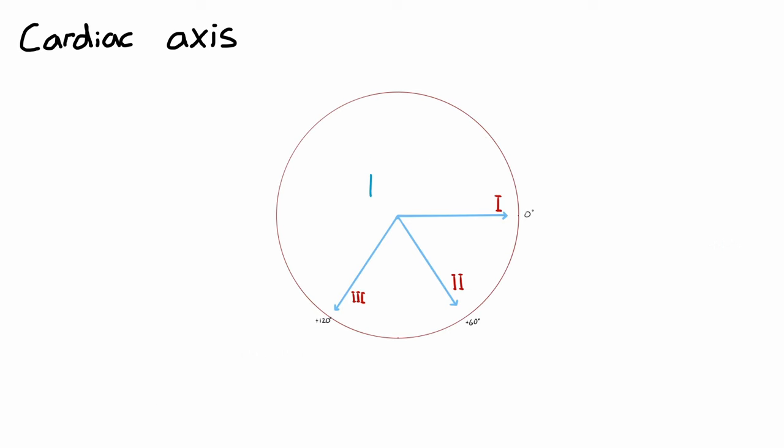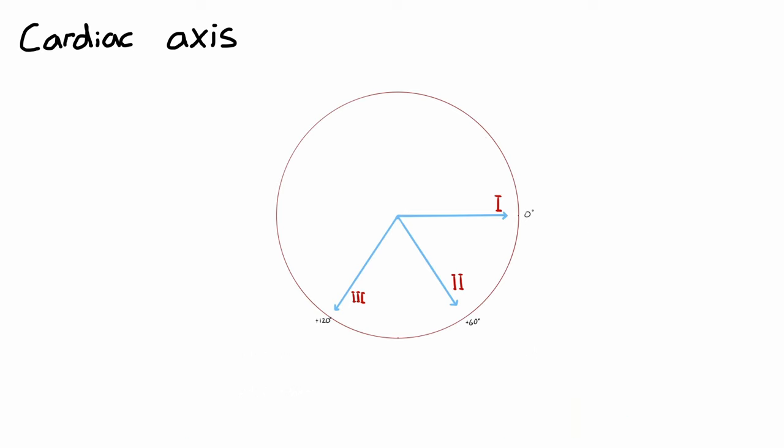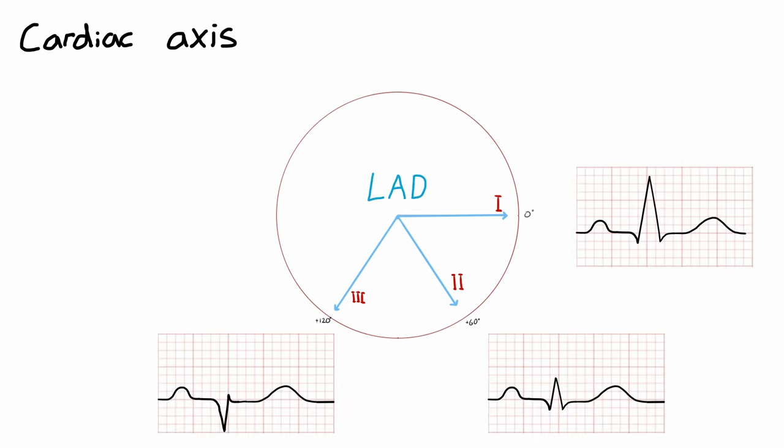In right axis deviation, lead 3 will be more positive than lead 2 and 1, since the overall direction of depolarization has moved clockwise to the right. Conversely, in left axis deviation, lead 1 will be more positive than lead 3 and 2, because the overall direction of depolarization has moved to the left. So to quickly summarize the assessment of the cardiac axis, we compare leads 1, 2, and 3 to decide whether there's left axis deviation, a normal axis, or right axis deviation.